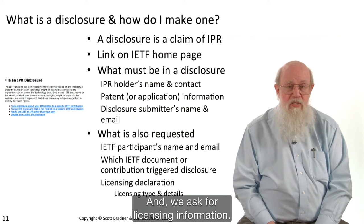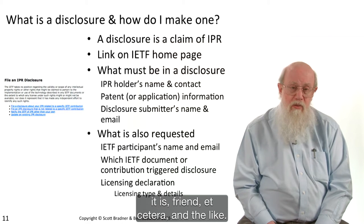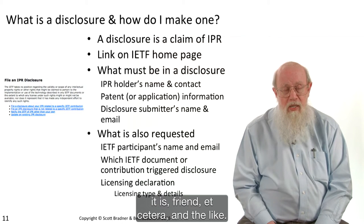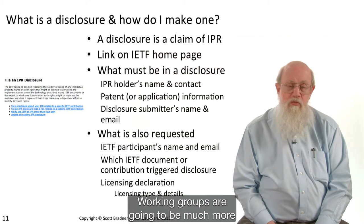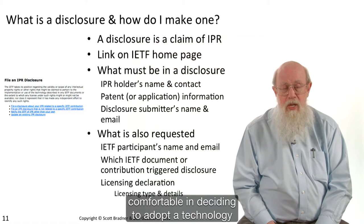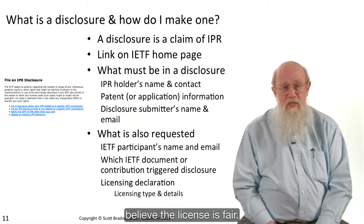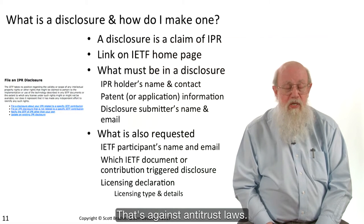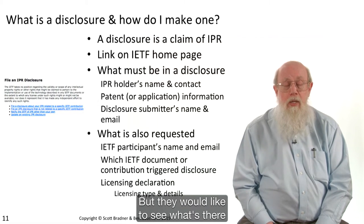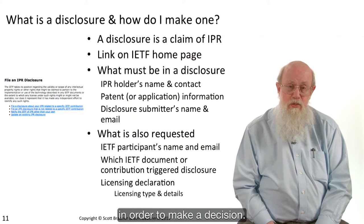We also ask for licensing information — we'd like to know what type of license it is, FRAND, et cetera — but we don't require it. Working groups are going to be much more comfortable deciding to adopt a technology where they can see the license and believe the license is fair. They're not allowed to go negotiate licenses with you — that's against antitrust laws — but they would like to see what's there in order to make a decision.